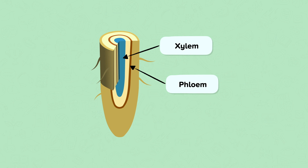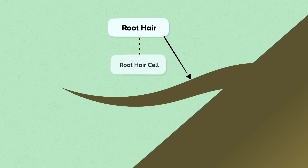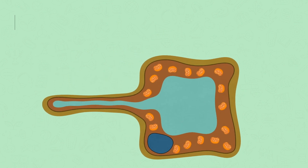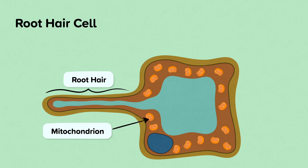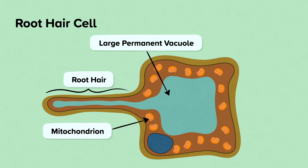Root hair cells are found on the surface of plant roots. They are specialised for absorbing water and minerals. They grow long hairs which grow deep into the soil, giving the roots a large surface area for absorption. Root hair cells do not carry out photosynthesis because it is dark in the soil, which explains why they do not contain chloroplasts. Absorbing minerals from the soil requires energy because they are absorbed by active transport. Root hair cells have lots of mitochondria to release lots of energy, and they also have a large permanent vacuole which helps to speed up the absorption of water.